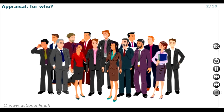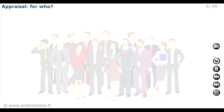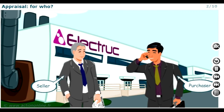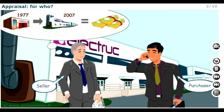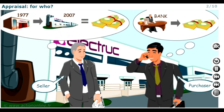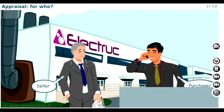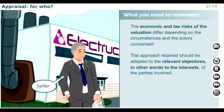We have seen that the valuation objectives vary according to the circumstances, but we also note that in any given situation the various actors may sometimes have conflicting interests. These conflicting interests are very clearly seen in disposals and acquisitions, for example. The owner aims to obtain the best valuation of his or her years of personal investment in order to pursue new wealth objectives. The buyer, on the other hand, has limited investment resources and will try to fix a lower value. So remember, the economic and tax risks of the valuation differ depending on the circumstances and the actors concerned.